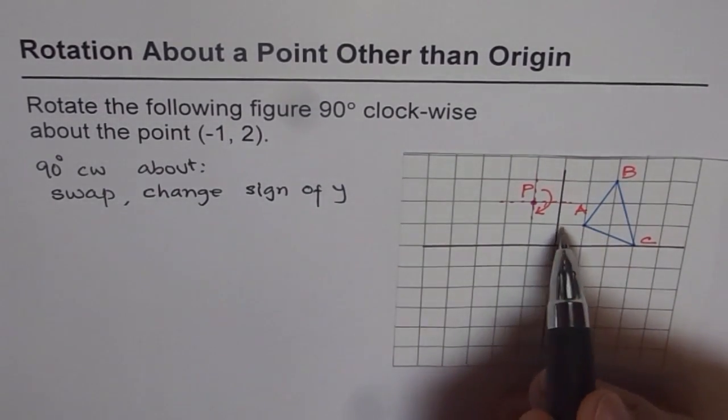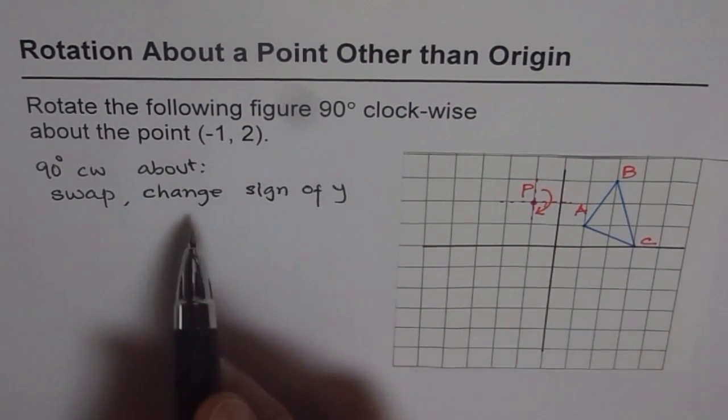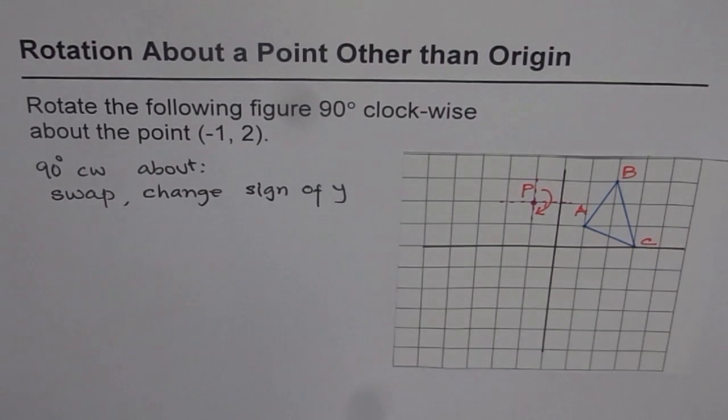If I move, if I rotate from here to there, y becomes from positive to negative. That is why we change the sign of y.